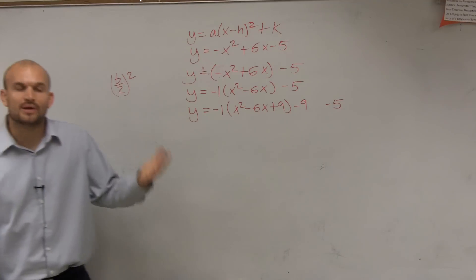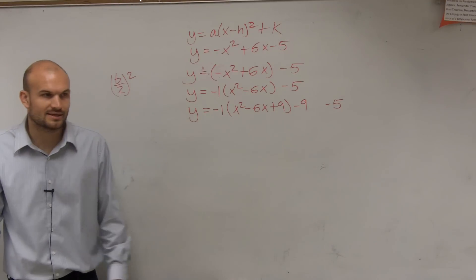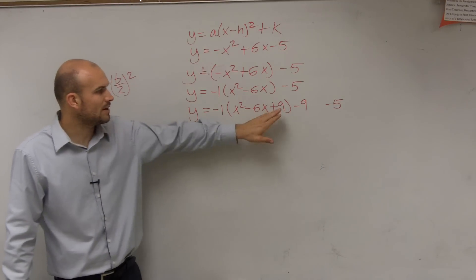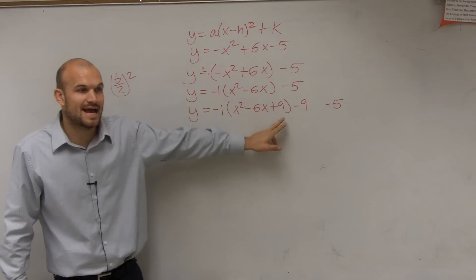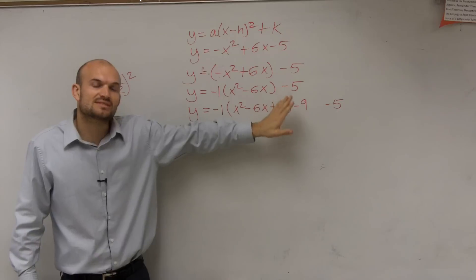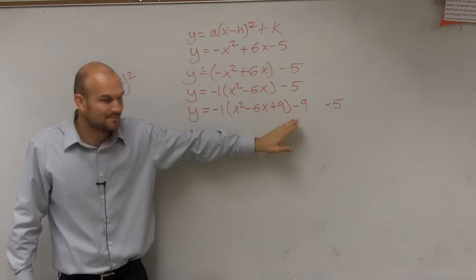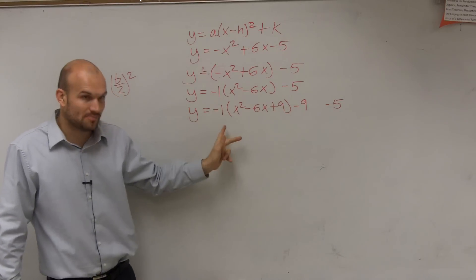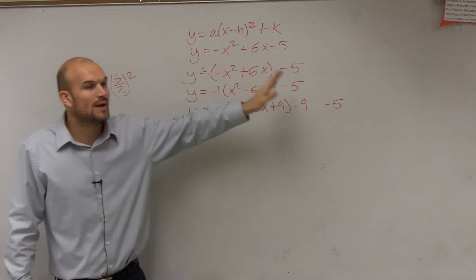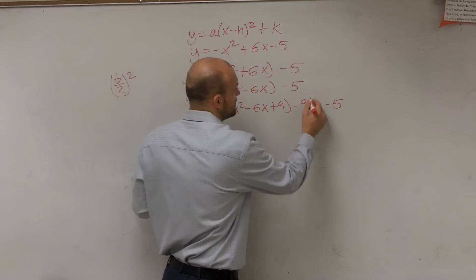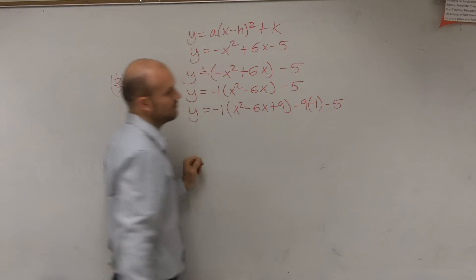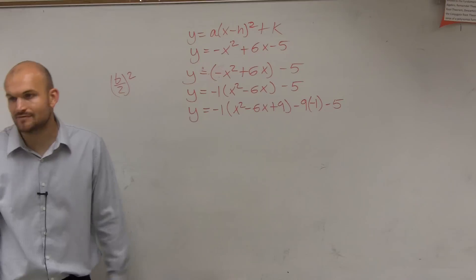Alright, but again, ladies and gentlemen, here's where it comes to a mistake that everybody comes up with. Remember, I added a 9, right? So I can add a 9 and subtract a 9 on the same side. But since I added a 9 and that 9 is being multiplied by a negative 1, you have to multiply your negative 9 times a negative 1. You guys just have to remember that step.